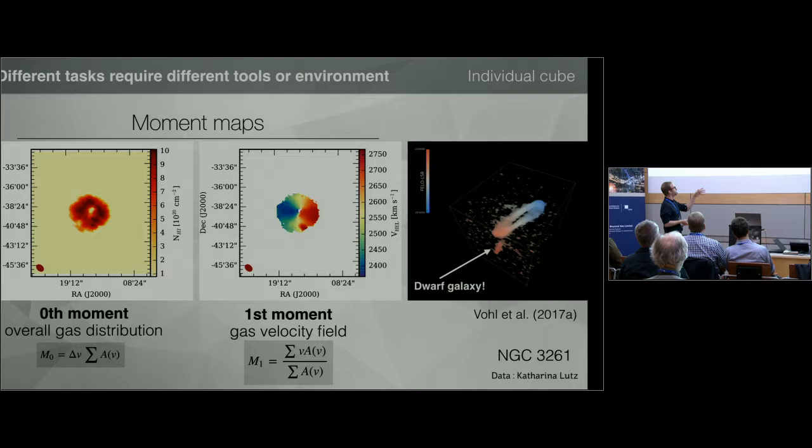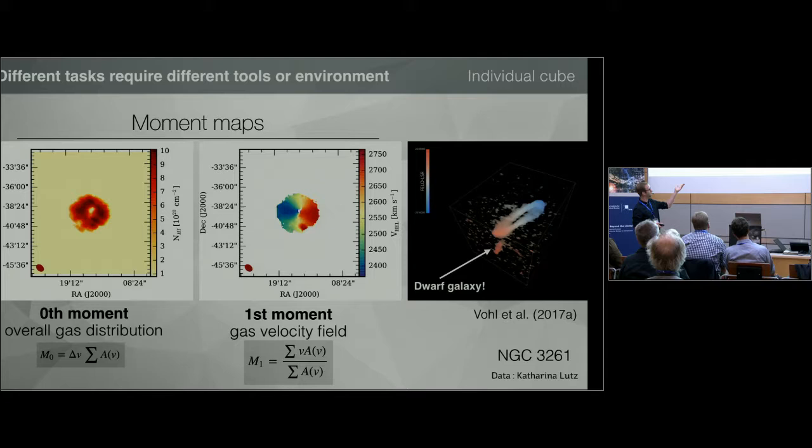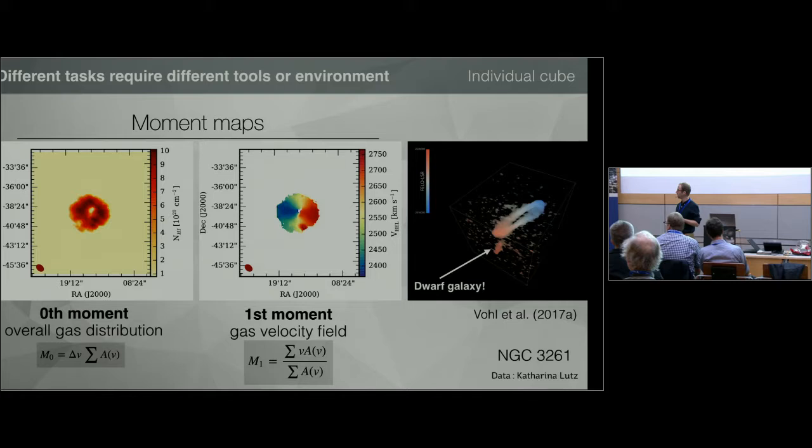Looking at this galaxy as an example, it looks like a perfectly rotating galaxy, but there's a small blob in the first moment map — if you only had this static image it could be difficult to know if this was an artifact or something interesting. But if you load your data on the graphics card and explore it, you can still generate those 2D images while having the full power to explore your data. By doing so we found a dwarf galaxy that was never found before — this is an extra tool you can use.